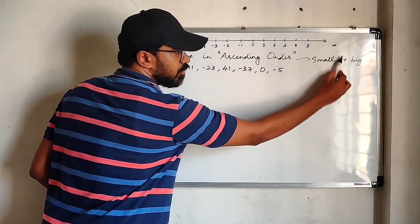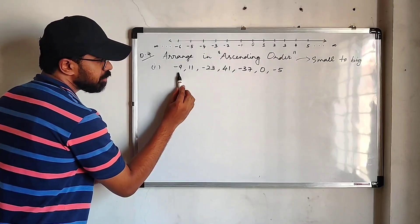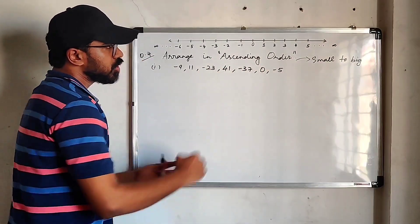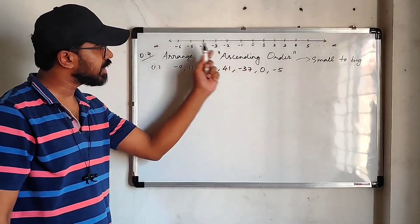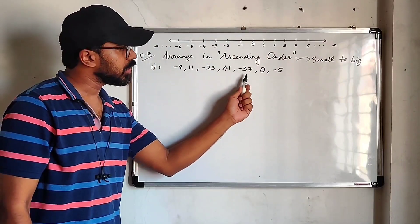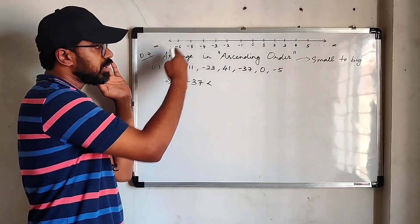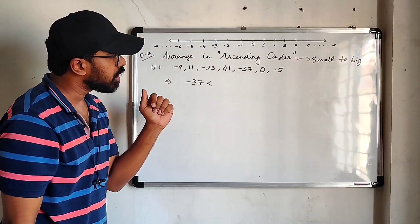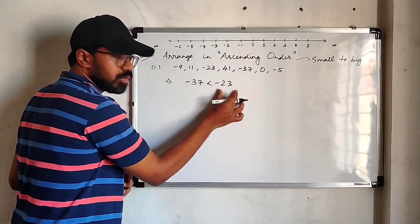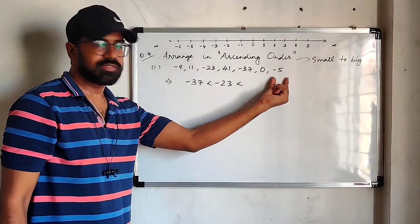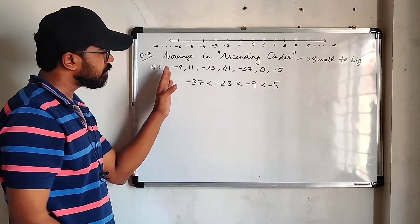Looking at the negative integers: minus 9, minus 23, minus 37, minus 5. Going left on the number line, minus 5 comes first, then minus 9, then minus 23, then minus 37. So the extreme left number is the smallest — that is minus 37. Writing in ascending order: minus 37 is less than minus 23, which is less than minus 9, which is less than minus 5.